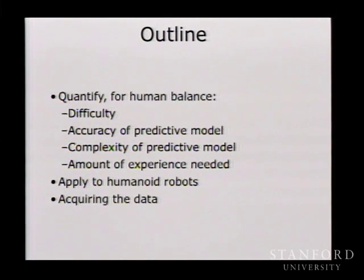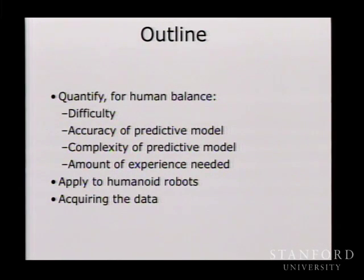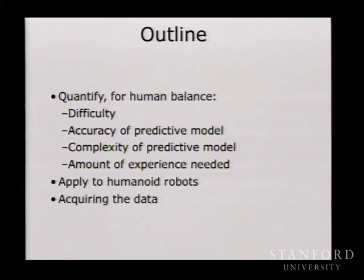I want to talk about what it is that humans are doing — how complicated a thing is it? We probably can't hope to do it in a robot with much less complexity than humans do it, and if we're lucky, it won't be too much more. A lot of any physical skill is being able to predict what's going to happen about half a second ahead. The accuracy of that prediction is a big part of what you learn with thousands of hours of practice. I'll try to quantify that — quantifying the number of digits, basically — and then how that applies to humanoid robots, and what my big plan is for collecting the amount of data we need.